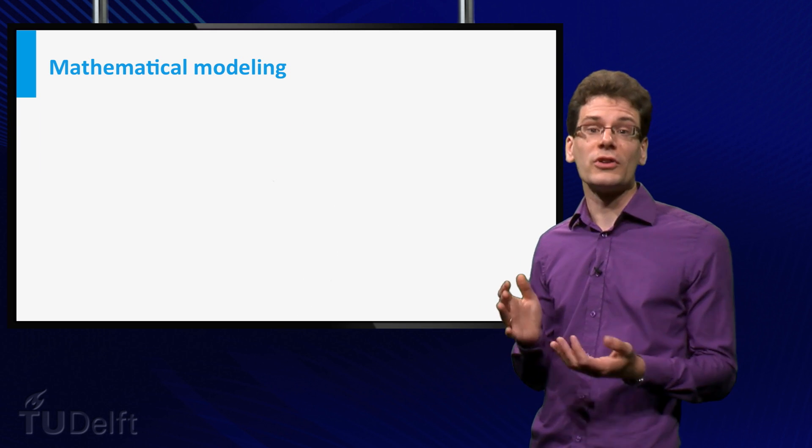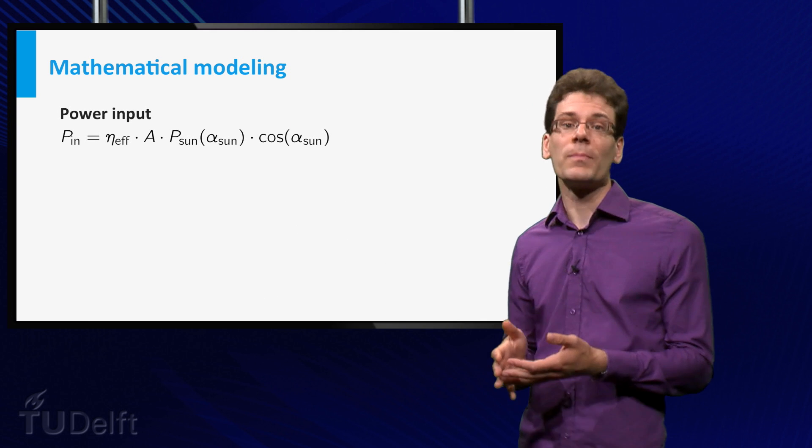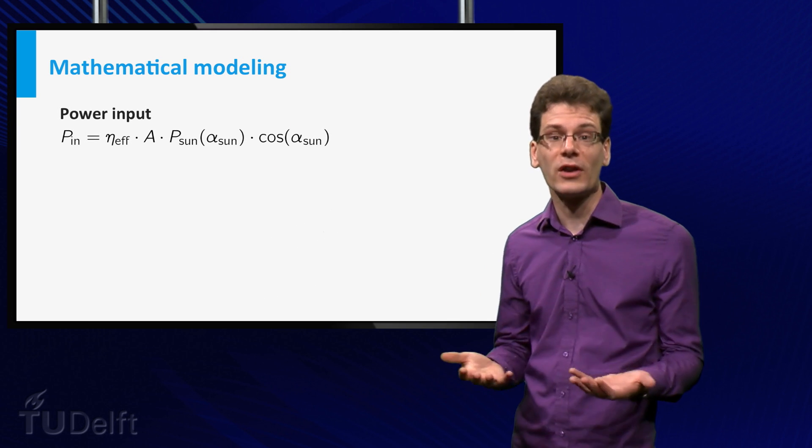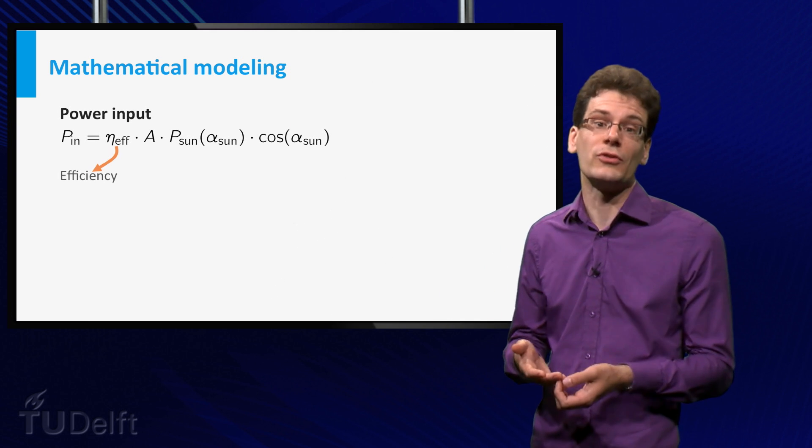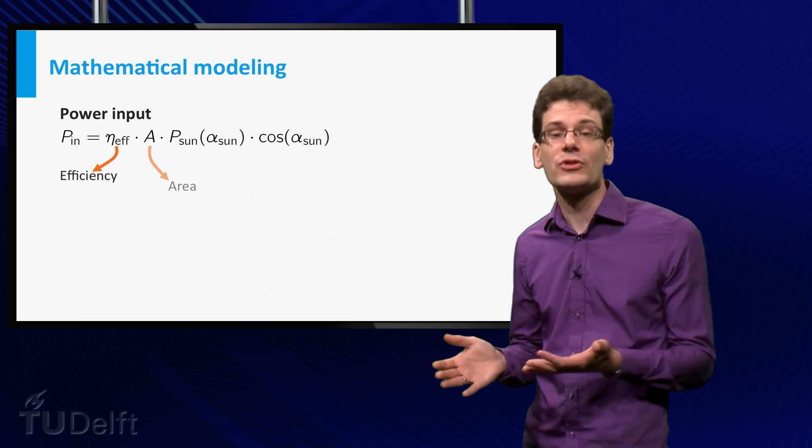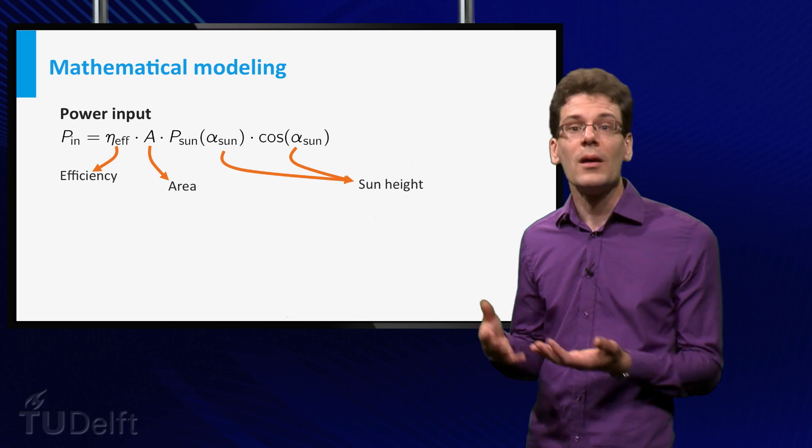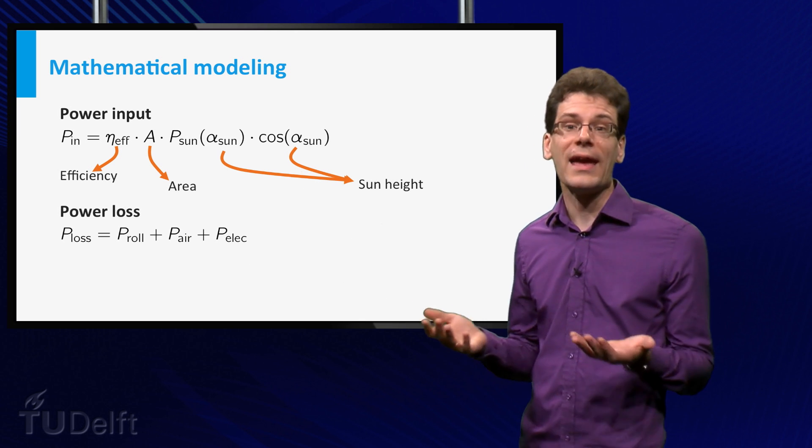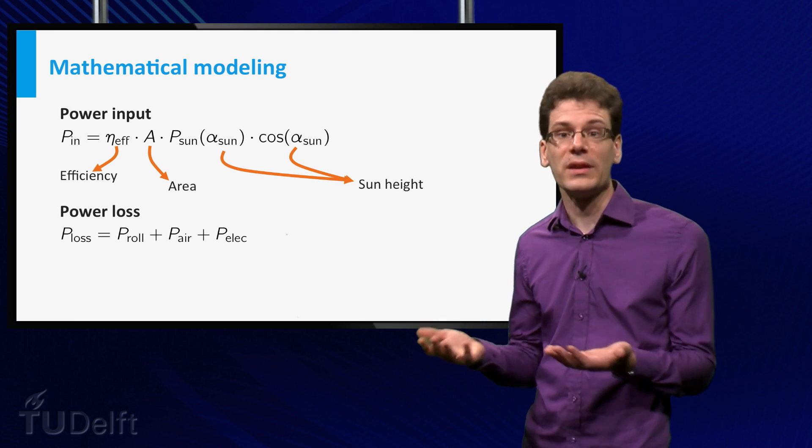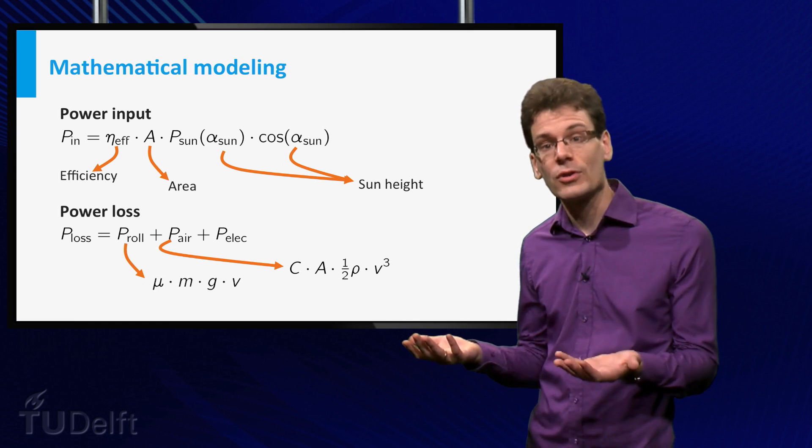Just a small example of such relations. The power input of the Nuance Car is described by a function relating the efficiency of the solar cells, the area of the solar cells, the height of the sun and other quantities. Power loss depends on roll and air friction, which both depend on speed and other parameters, and loss of electrical power.